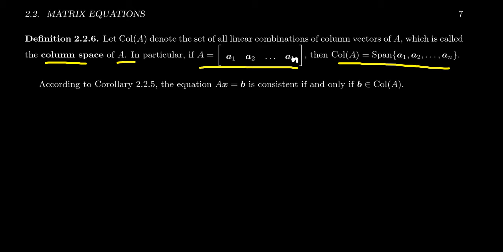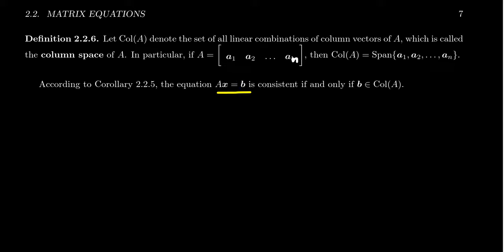We've seen previously that the matrix equation Ax equals B is consistent exactly when B is a linear combination of the column vectors of A. So with the introduction of the column space, we see that the matrix equation Ax equals B is exactly consistent when B is inside the column space of A.